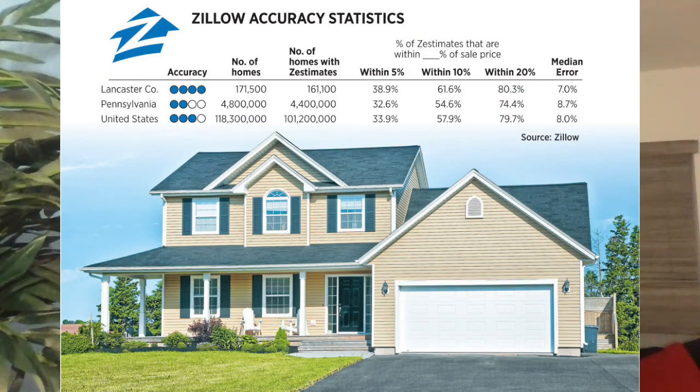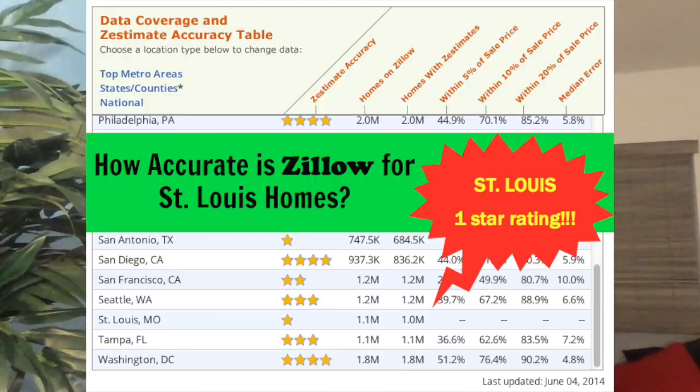If you can't find a comparable property in close proximity, go back to page 160 and find another neighborhood with similar quality schools and similar access to shopping. Some people use Zillow and Bing to find comps, but I'm not comfortable having computers make decisions like that.